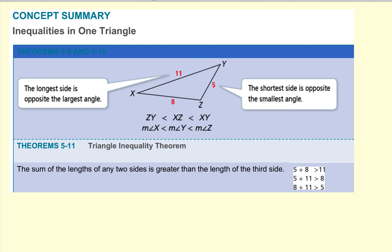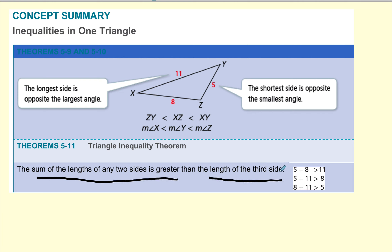What we've done in this lesson: the longest side is opposite the largest angle, and the shortest side is opposite the smallest angle — that's the inequalities of one triangle. The last thing we talked about was the Triangle Inequality Theorem, where the sum of any two sides has to be greater than the third side, otherwise the triangle won't form. This is the end of the screencast.